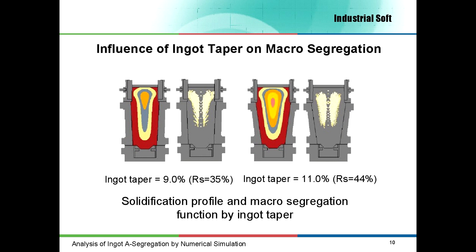To analyze the influence of ingot taper on A-segregation, as in the previous case, I made two simulations: for one, the ingot taper has been 9%, and for the second one, 11%. In both cases the ingot weight has been 50 tons as well. As we can see, the area affected by segregation is larger if the ingot taper is high. One of the reasons is the increasing of diameter at the top of the ingot and a lower solidification rate. So to minimize the macro-segregation in this ingot, a low ingot taper is recommended.